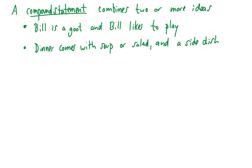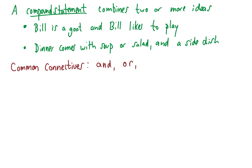Next example: dinner comes with soup or salad and a side dish. There are actually three simple statements here — dinner comes with soup, dinner comes with salad, dinner comes with a side dish — connected with 'or' and 'and'. Simple statements are often combined together using connectives. Common connectives include 'and', 'or', 'if-then', and 'if and only if'.